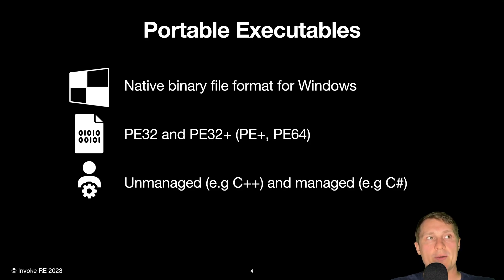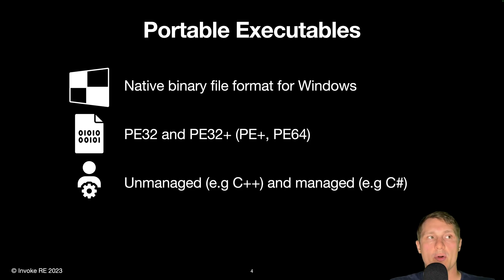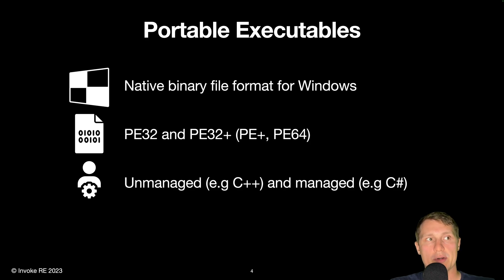Programming languages such as C and C++ are compiled into unmanaged code, where programming languages such as C# are compiled into an intermediate language bytecode format that is stored in the PE and is interpreted at runtime by framework libraries that are loaded by the PE.